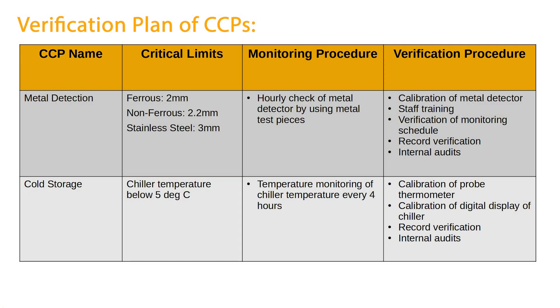Similarly, for verification, for each critical limit we also mention a verification plan in addition to the monitoring plan. For example, metal detectors are monitored on an hourly basis using metal detector test pieces. But in addition to that, we do the calibration of the metal detector, retraining of staff, and confirm the schedule is being followed — all these are verification steps. Another example: for cold storage of ready-to-eat food, temperature monitoring is monitoring, but calibration of the probe thermometer, calibration of the temperature display, internal audits, and record verification are all verification techniques for that CCP.